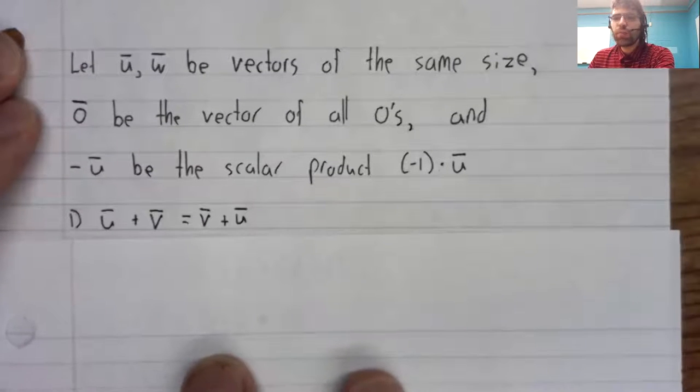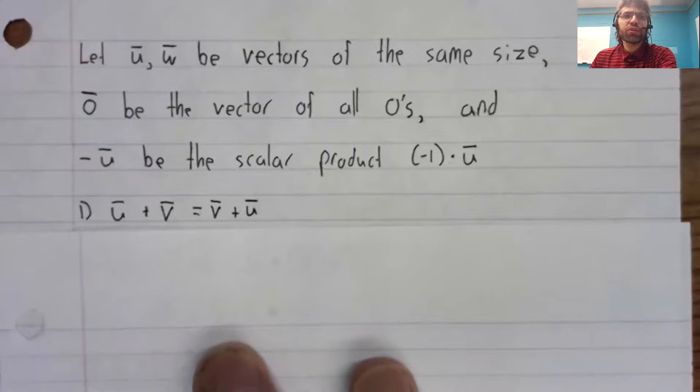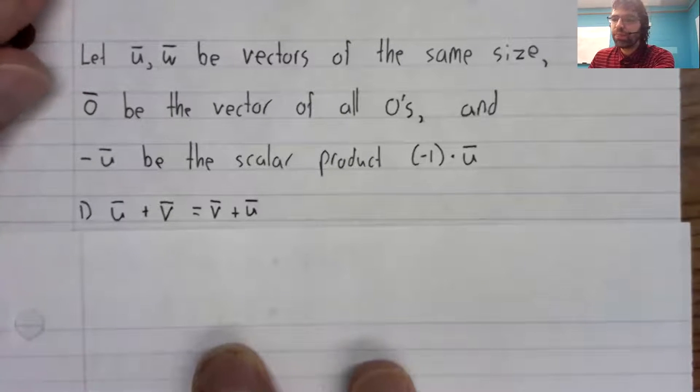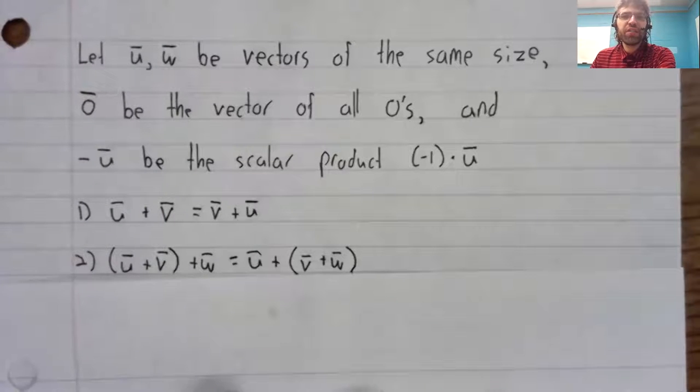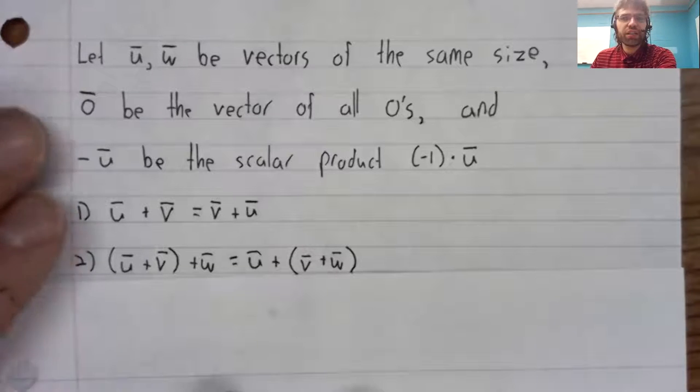When you add, order doesn't matter. Addition is commutative. If you're adding three vectors, you can put parentheses in wherever you want. Addition is associative.